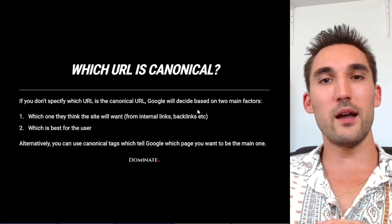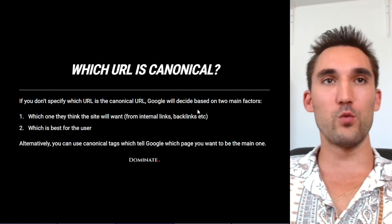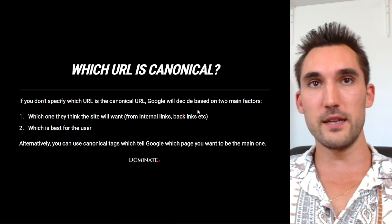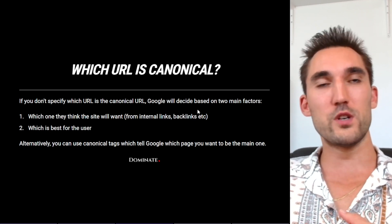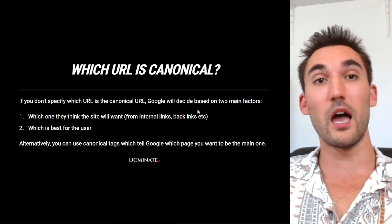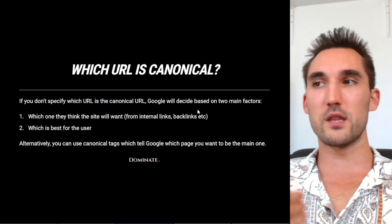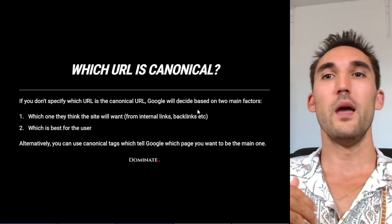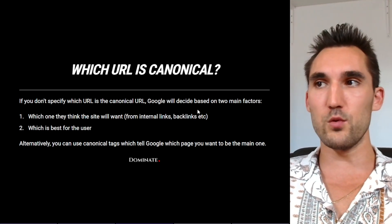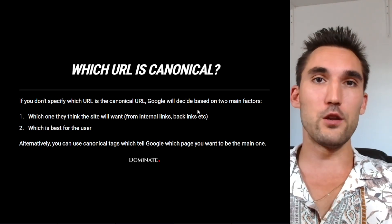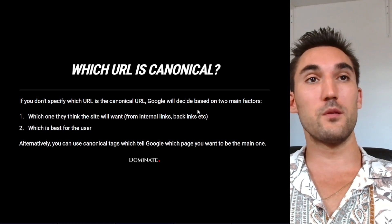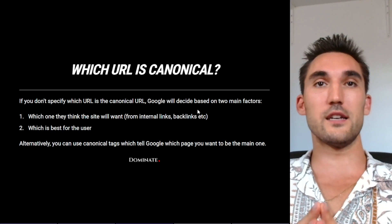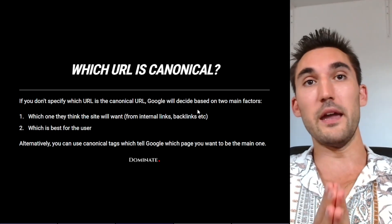So which URL is the canonical? Typically, if you don't specify which URL is the canonical, Google is just going to decide which one it is based on a couple of factors. One is which one they think the site wants to be the canonical — they'll typically look at internal links, backlinks, and menu items to decide which one the site would prefer. The second one is going to be which one is best for the user.